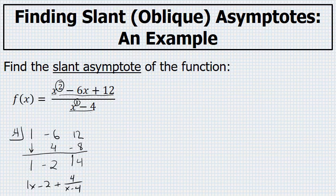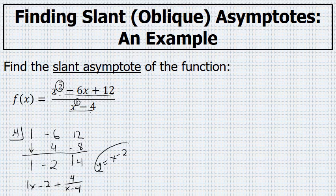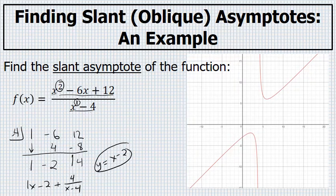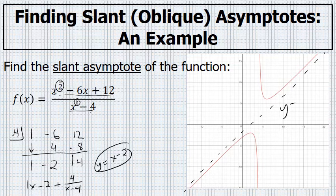The slant asymptote has the equation y equals x minus 2. If we look at the graph of this function, you can see that there is in fact a slant asymptote and it has the equation y equals x minus 2.